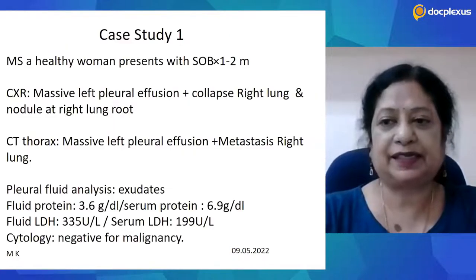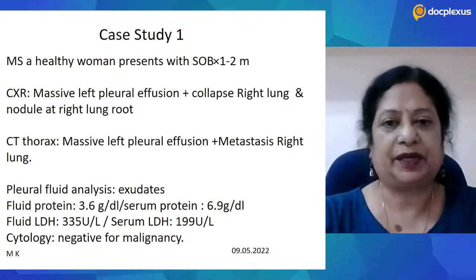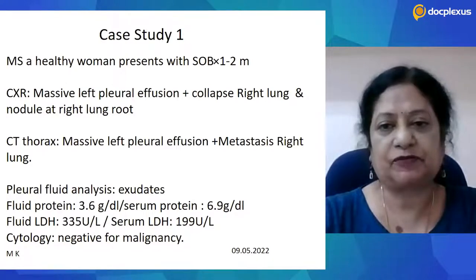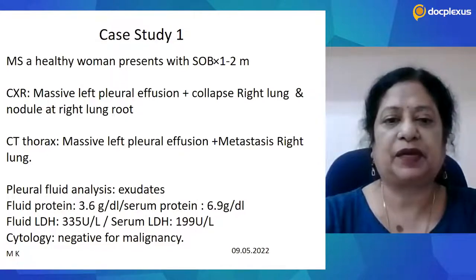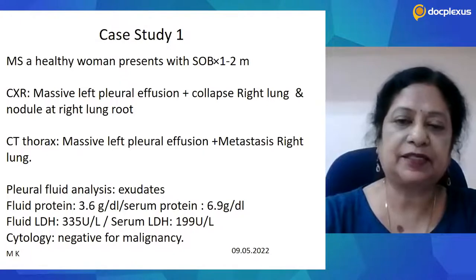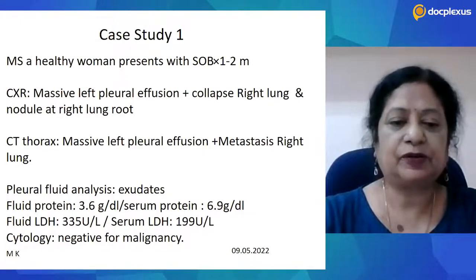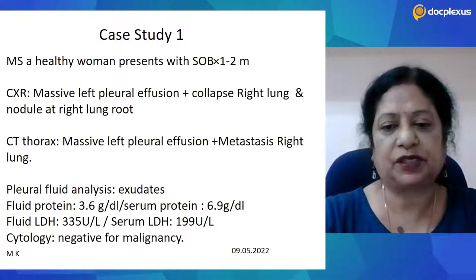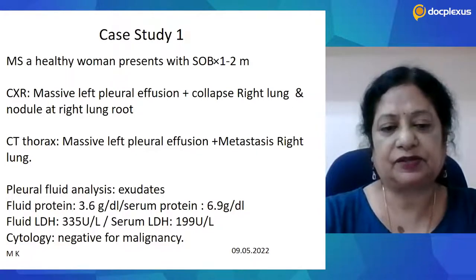Case study one: a healthy woman MS who presents with shortness of breath of one to two months duration. The chest X-ray shows massive left pleural effusion, collapse of the right lung, and a nodule in the right lung root. CT thorax shows massive left pleural effusion with metastasis to the right lung. Pleural fluid analysis: it is an exudate — protein 3.6 g, serum protein 6.9 g, ratio more than 0.5, and pleural fluid LDH 335, serum LDH 199, meeting Light's criteria with ratio more than 0.6.